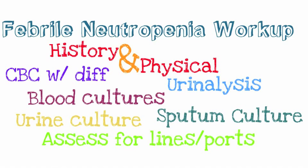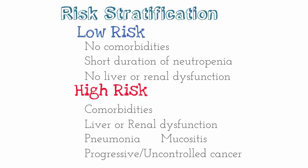Now let's talk about risk stratification for these patients. Low-risk patients have no comorbidities, a short duration of neutropenia, and no liver or renal dysfunction — you'll mostly encounter these in an outpatient setting. High-risk patients tend to have comorbidities like CHF, hypertension, and diabetes, as well as liver or renal dysfunction, pneumonia, mucositis, and progressive or uncontrolled cancer. All these indicate a high-risk patient who needs to be treated differently than a low-risk patient.